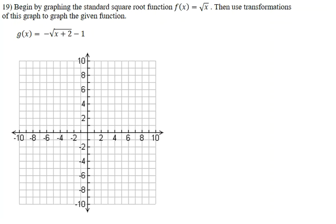We're looking at question 19. It's asking us to begin by graphing the standard square root function f(x) = √x, then use transformations of this graph to graph the given function g(x) = -√(x+2) - 1.